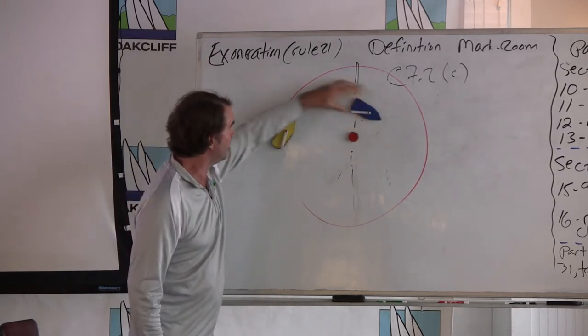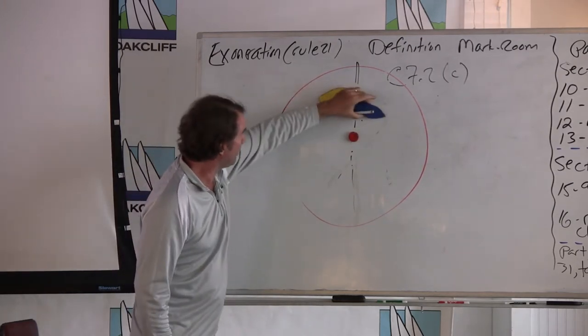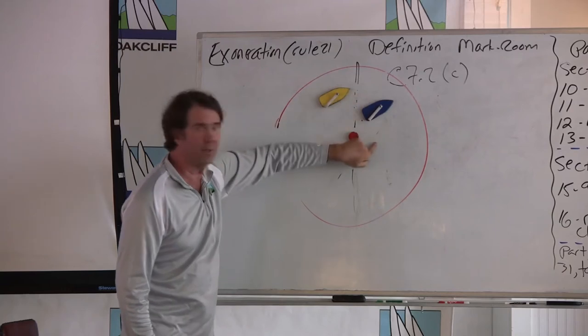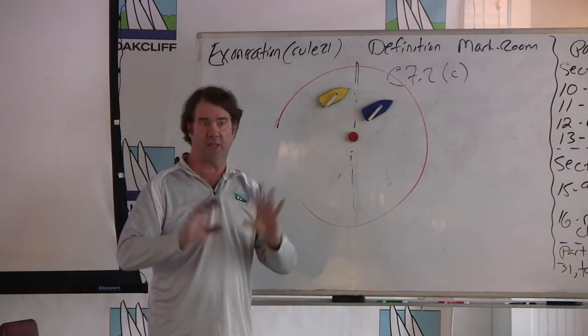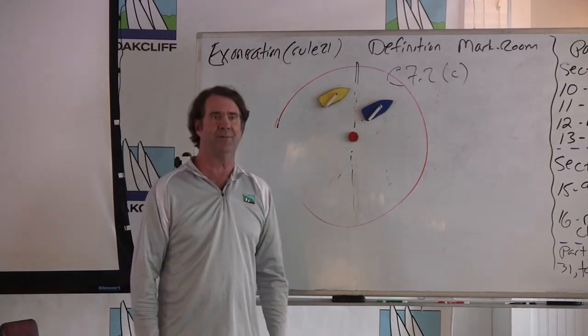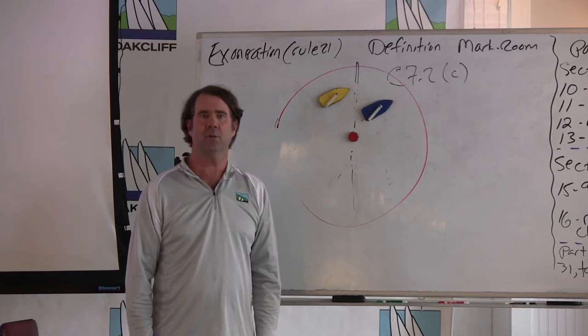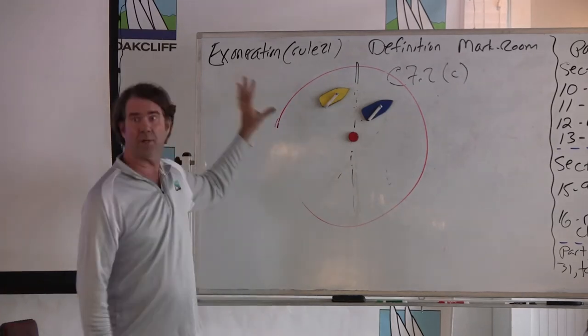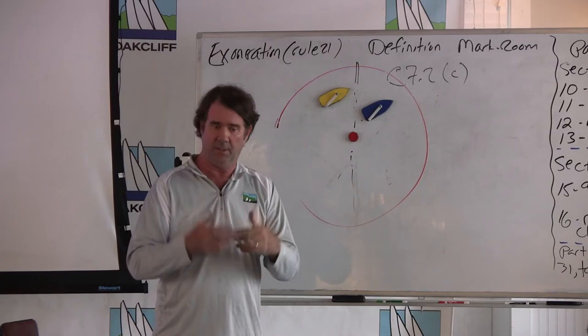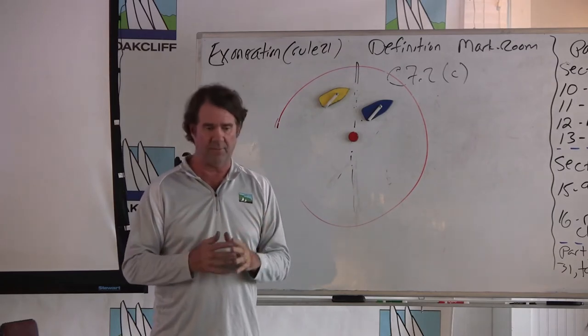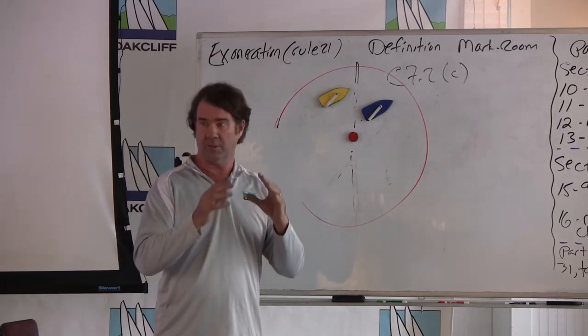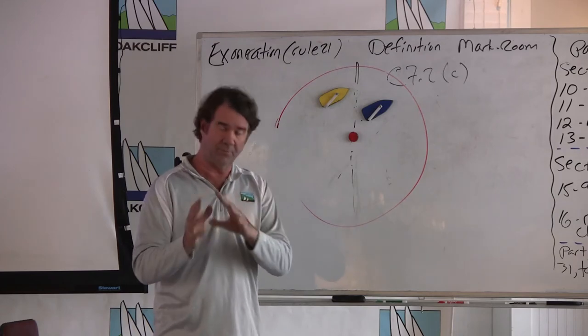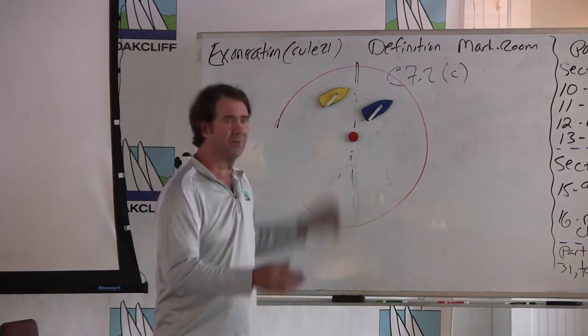Or if you get here and then turn up, now you've left the mark astern, now your protection under 21 is gone for that mark. Other questions about exoneration? We talked about exoneration, what that means, gave all those lured mark scenarios, the difference between the mark room definition before and now, and when it turns off.